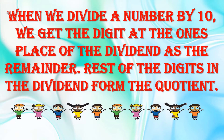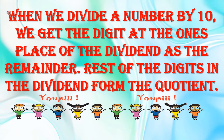When we divide a number by 10, जब हम किसी भी number को 10 से divide करते हैं, we get the digit at the ones place of the dividend as the remainder. Dividend की ones place पर जो digit है वो remainder होगा, और rest of the digits in the dividend form the quotient — चाहे tens, hundreds, thousands या किसी भी place पर हों, वो सब मिला के quotient form करते हैं।